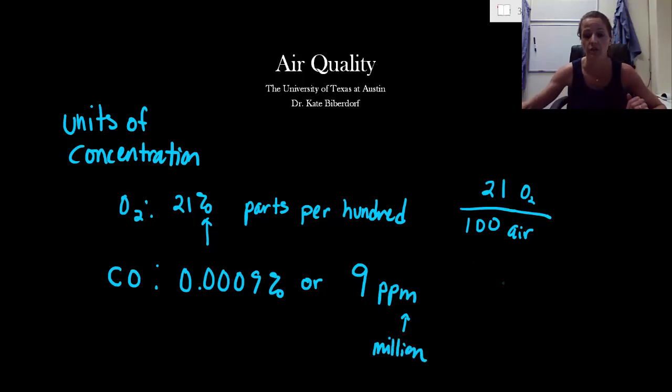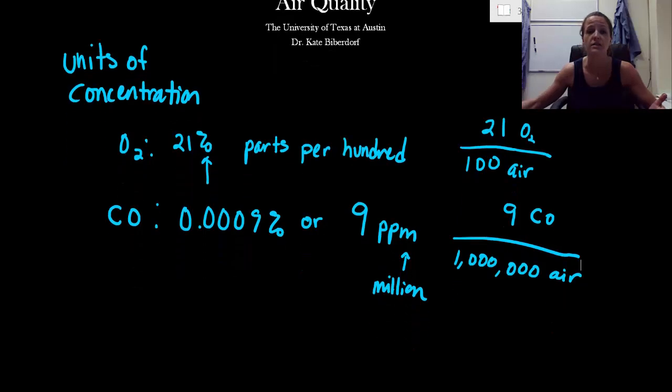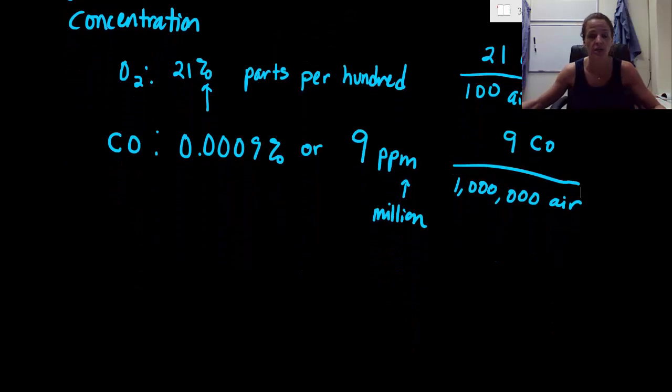Instead, what we do is we have this phrase called parts per million. So I would say it is 9 ppm, where this is parts per million. So if you were to write it out in a fraction, you would say we have 9 pieces of carbon monoxide for every million, so 1 million down here, pieces of air. This is just an easier way, by saying 9 parts per million, of one person communicating to another person how much of this pollutant is in the air.